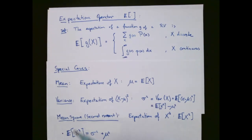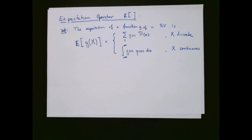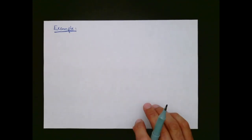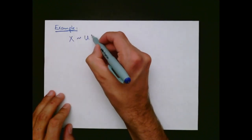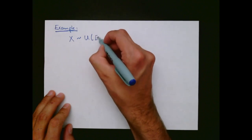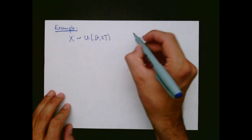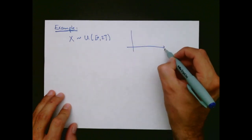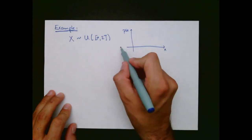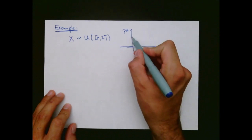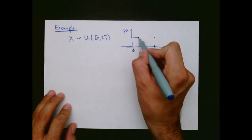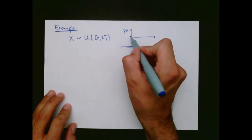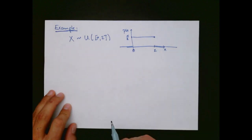To give a feel for how we compute the mean, variance, and mean square of a random variable, here is an example. We consider a uniform random variable that is uniform on the interval [0, 2]. We can draw the pdf p(x): it is 0 outside the interval [0, 2], and inside it takes the value one-half, so that it integrates to 1.